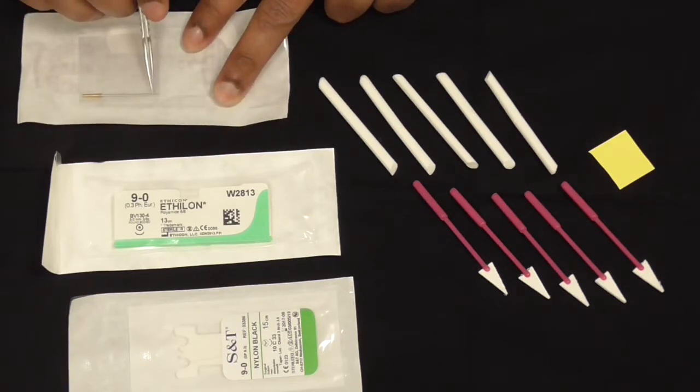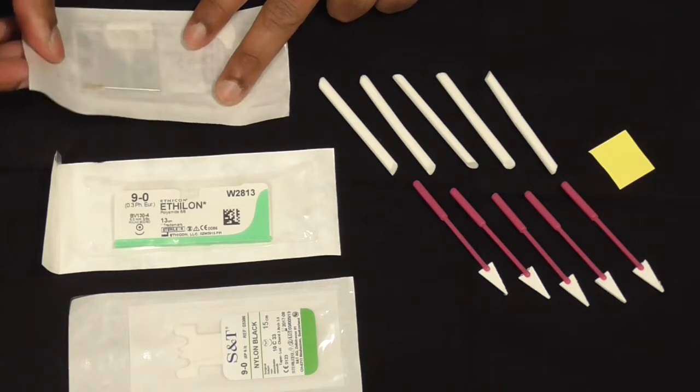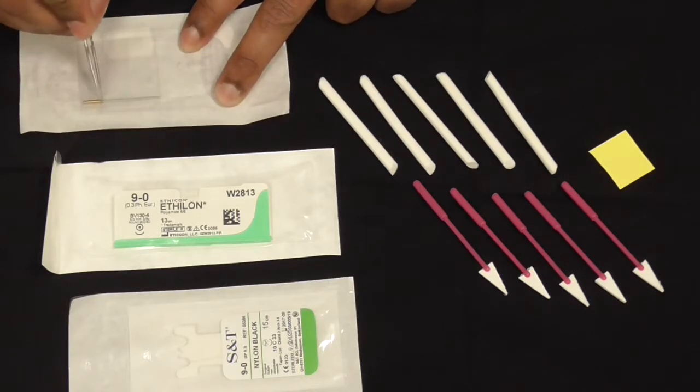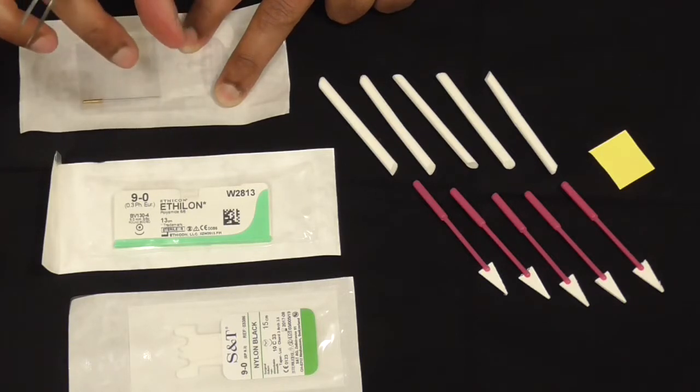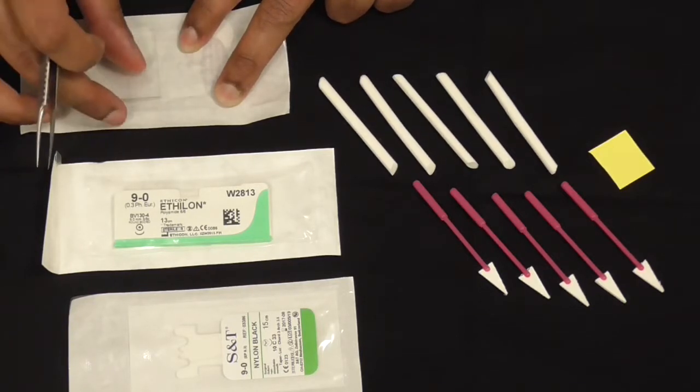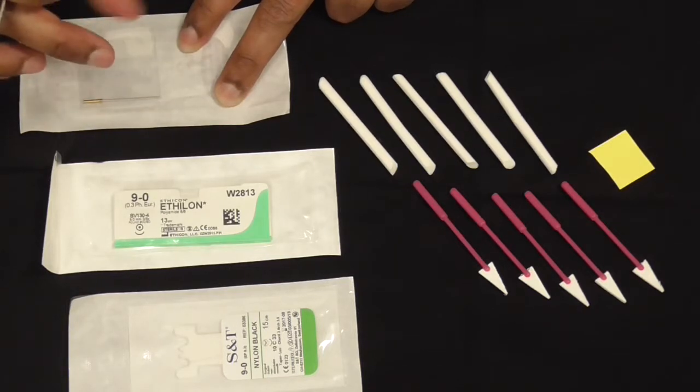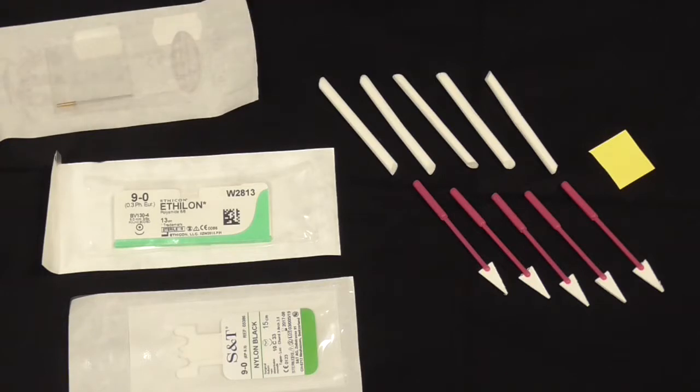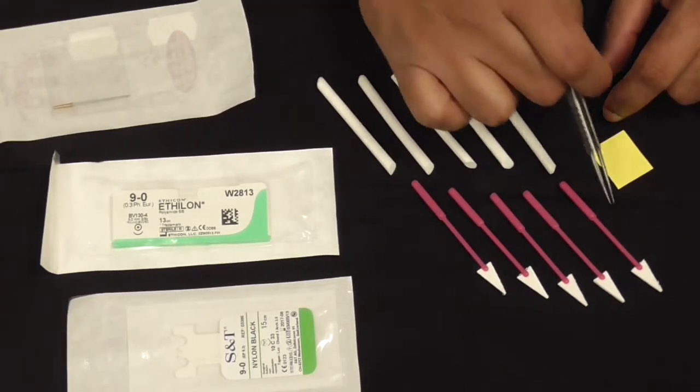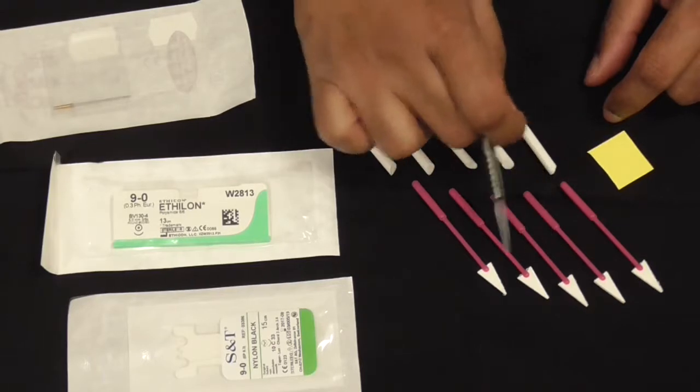The next thing that's quite useful is this little microsurgery suction tip. That goes into a normal suction tip and gives you a nice low-pressure sucking and irrigation. That's quite useful to have.